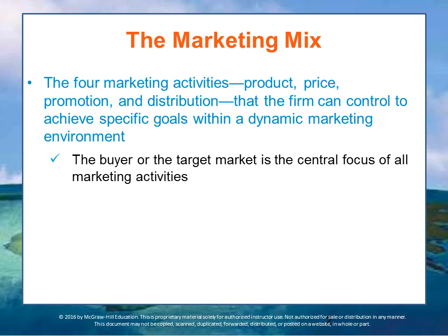The marketing mix refers to the four marketing activities: product, price, distribution, and promotion. Sometimes they use 'place' for distribution and call it the four P's. These are the four activities that a firm must control to achieve specific goals within a dynamic marketing strategy.